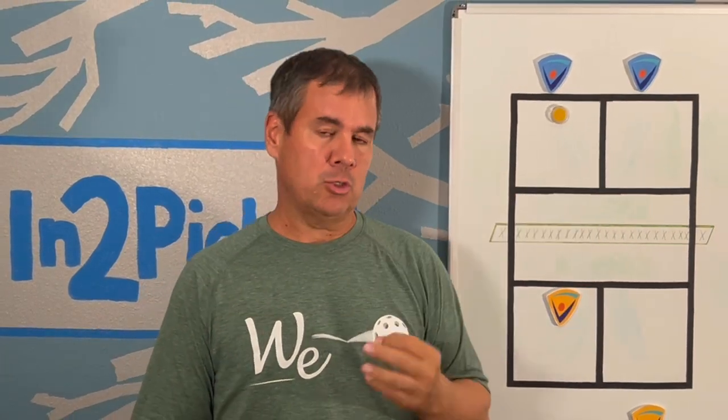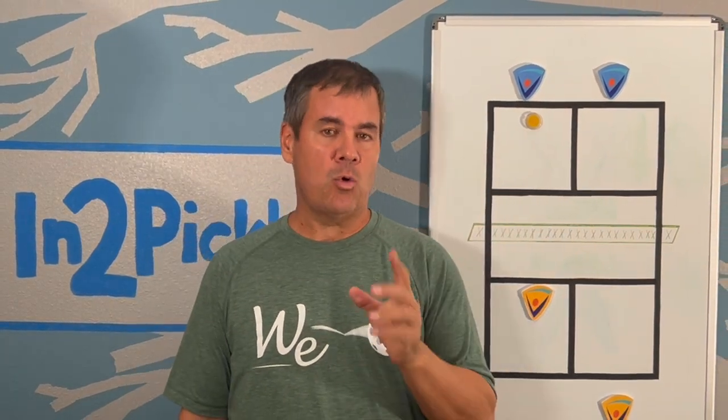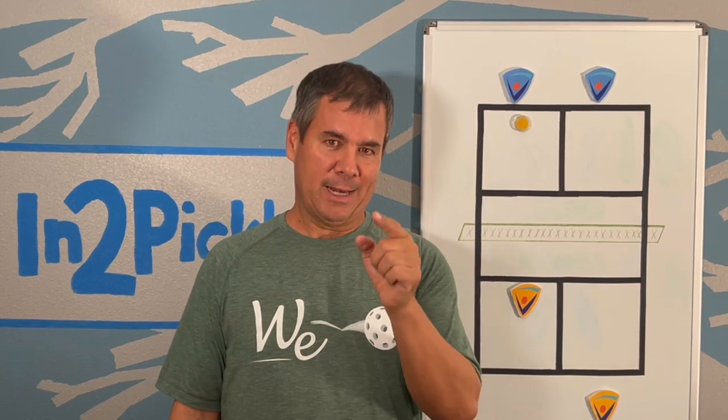Specifically, the question was when the serve team breaks the X on a short return of serve, should the shot be hit to the player at the no-volley zone line or to the returner who's still in motion? In this video, we're going to give you the answer.